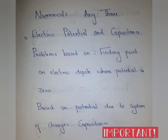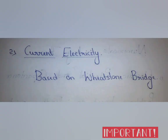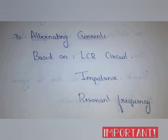From the first chapter, Electric Potential and Capacitance, problems will be asked on finding the point on an electric dipole where potential is zero, problems based on potential due to a system of charges, and capacitance. From the second chapter, Current Electricity, problems based on the Wheatstone bridge will be asked for your exams.